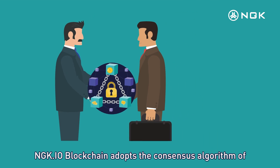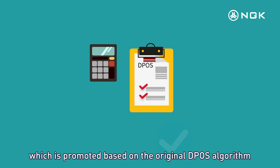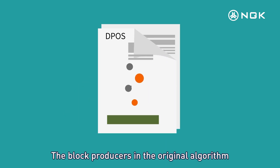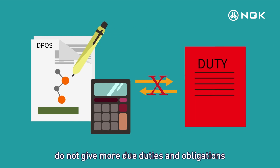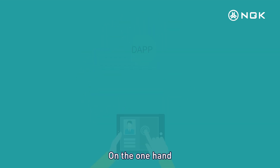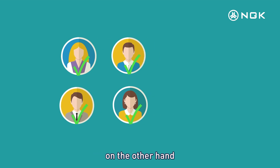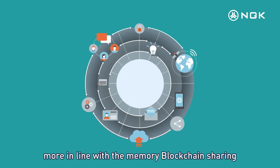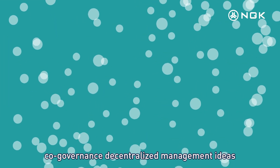NGK.io Blockchain adopts the consensus algorithm of DePOS, which is promoted based on the original DePOS algorithm. The block producers in the original algorithm do not have more defined duties and obligations, which greatly hinders the development of ecology. On one hand, DePOS can stimulate the enthusiasm of developers; on the other hand, promote the DApp ecological development, in line with the blockchain sharing co-governance decentralized management ideas.